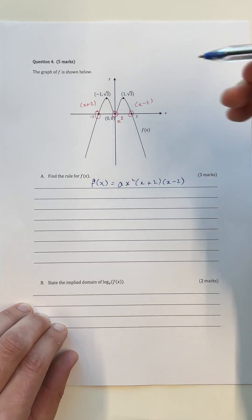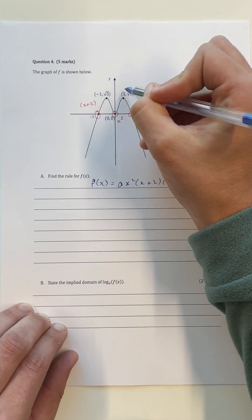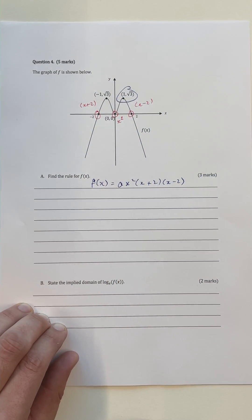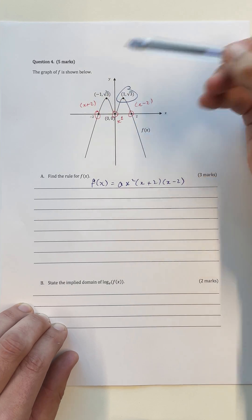What we need to do is substitute an external point away from those x-intercepts. One of those points might be 1 comma square root of 3. You can easily use this point as well.